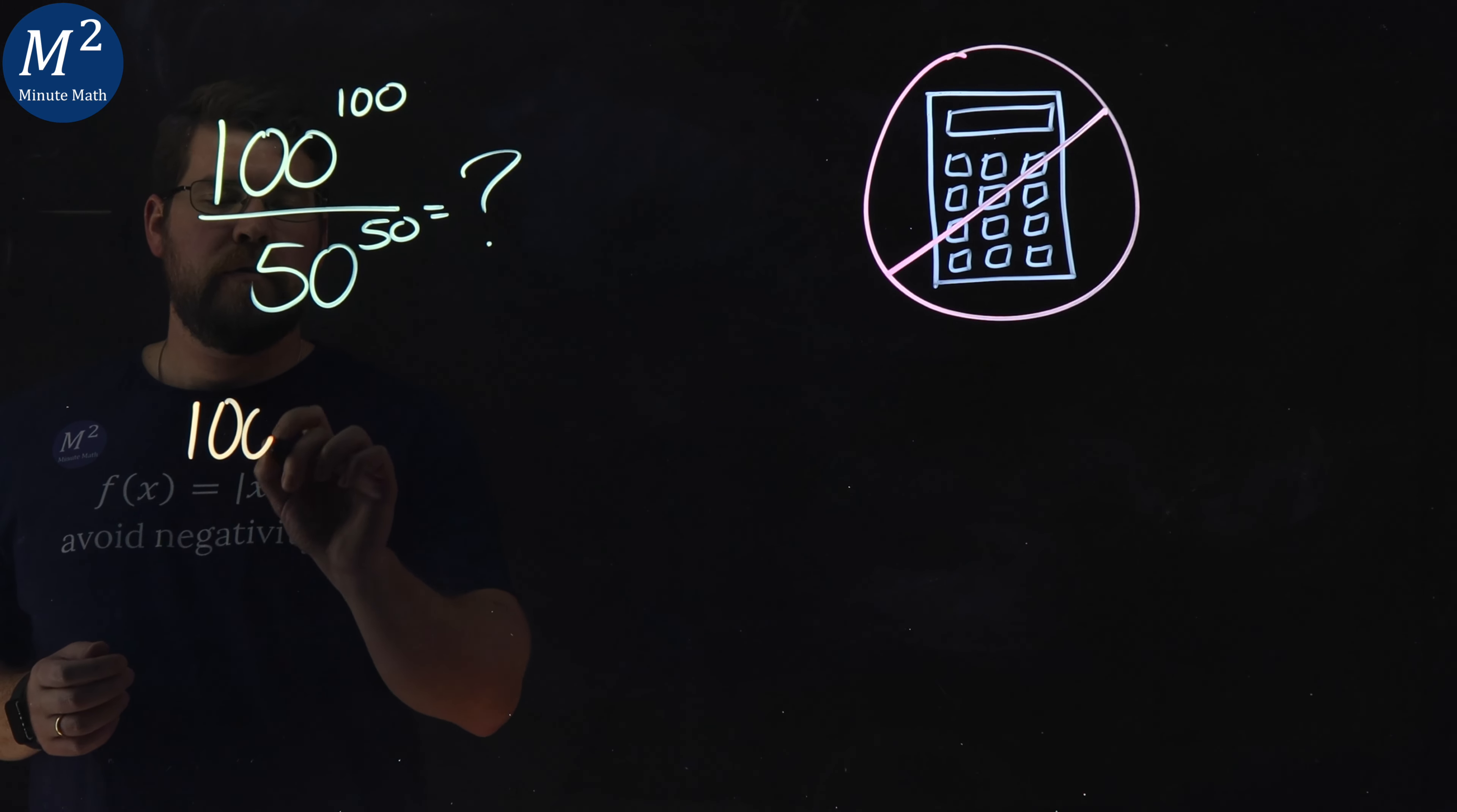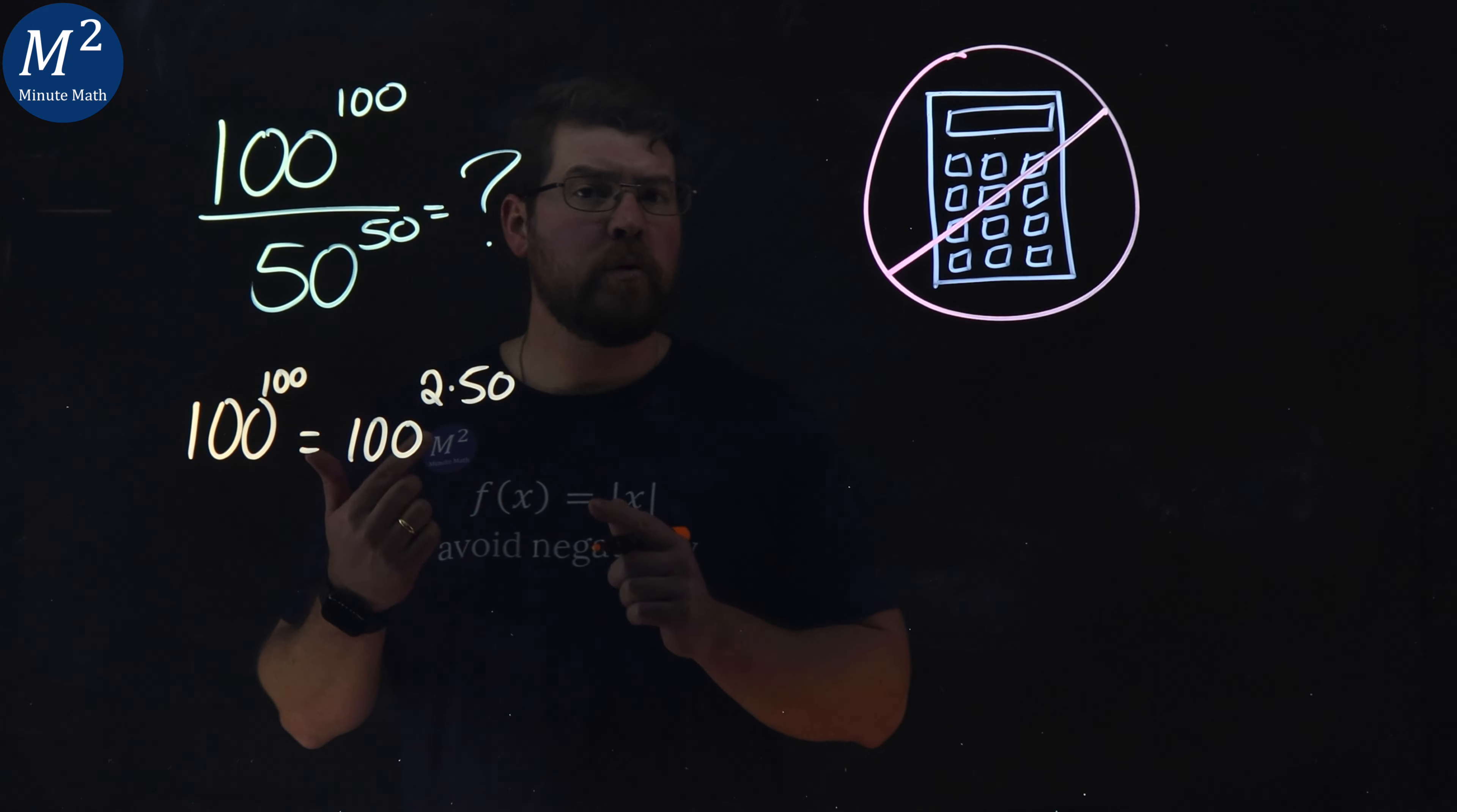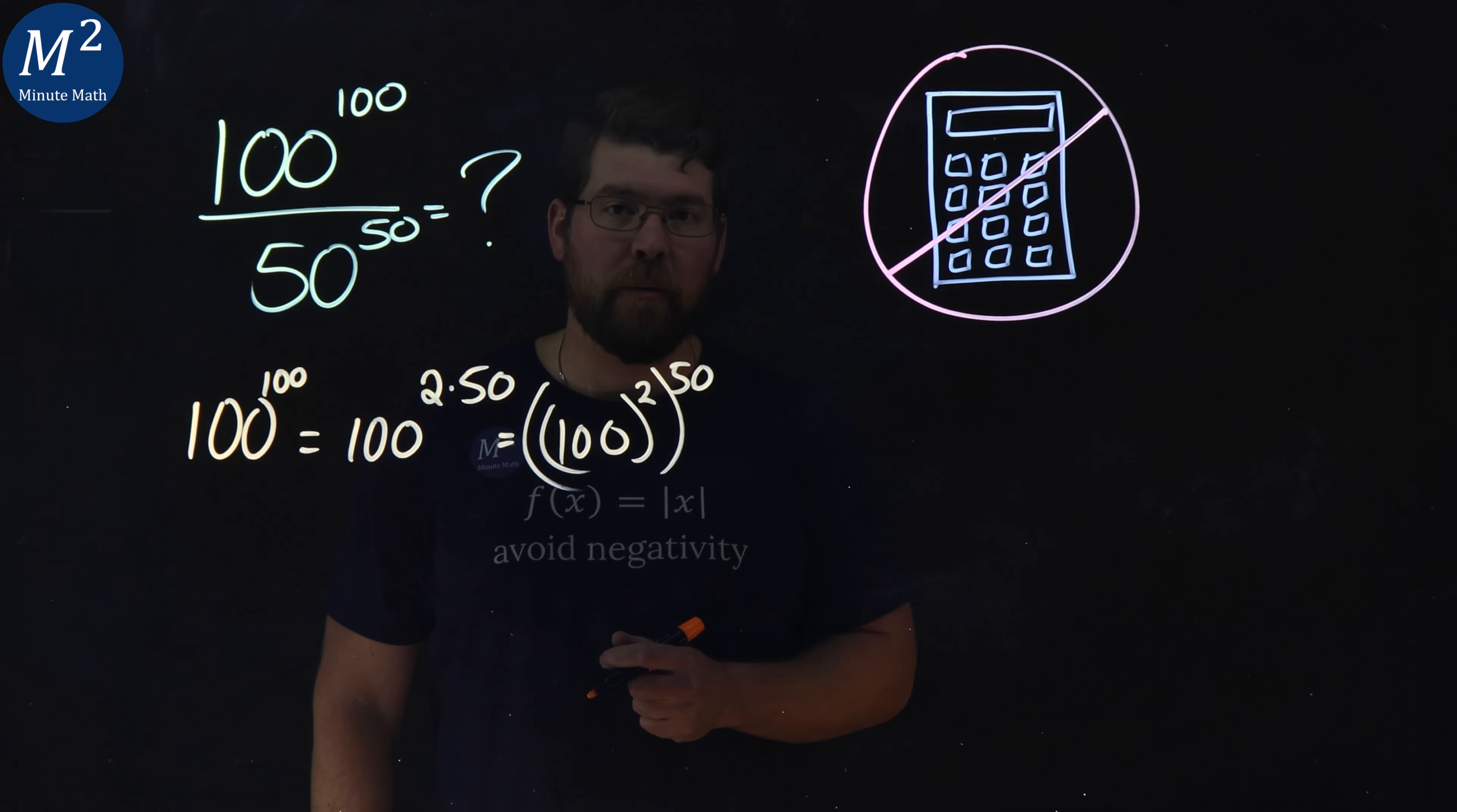100 to the 100th power. Well, that 100th power can be rewritten as 2 times 50. And our rules of exponents say if we have multiplication of the exponent, we can write it as 100 squared to the 50th power.